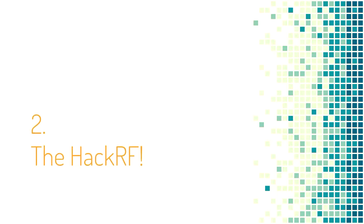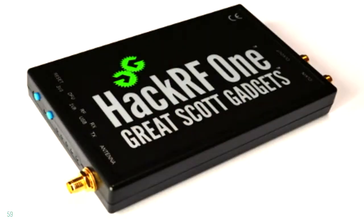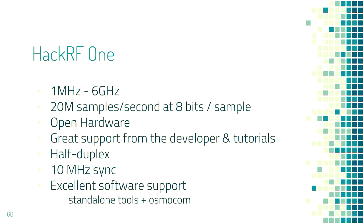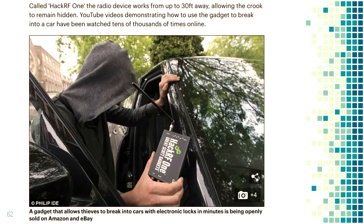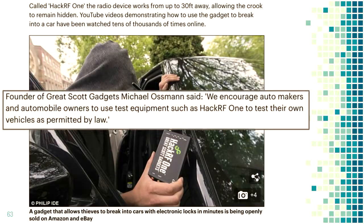The HackRF is an example of a software radio — it's a mid-range device that can only transmit or receive at once, but it can do both. It can sample anything from 1 MHz to 6 GHz, and you can sync multiple HackRFs together for things like radio astronomy and interferometry. It has excellent support from its developer, open source hardware, and open source software. It was in the news a few weeks ago — it turns out lots of things use radio and, just like IoT devices, radio devices are not very well secured. The creator noted that maybe people should use the HackRF to debug and test their security.